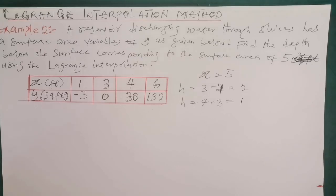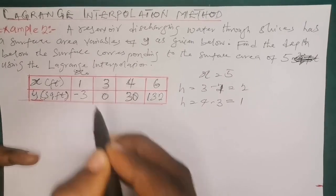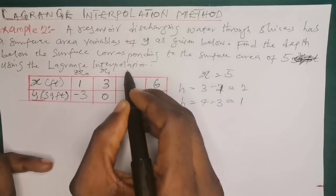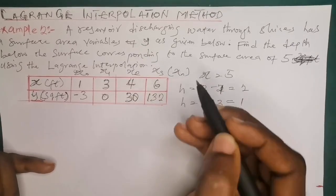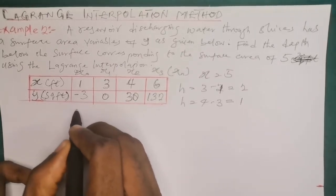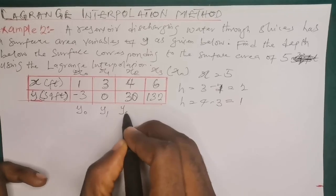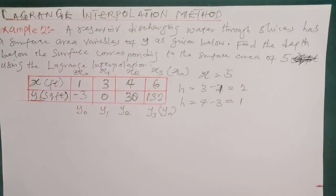The very first value of x is termed x-naught, the second value is x1, the third is x2, and the last value is x3, which can also be called x-n. Similarly, the first value of y is called y-naught, the second y1, the third y2, and the last y3, which can also be called y-n.